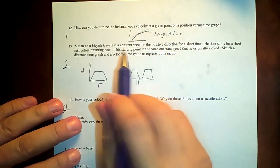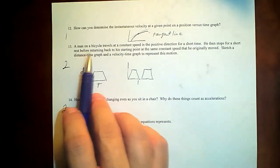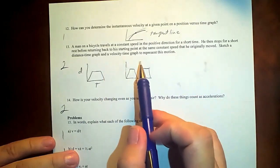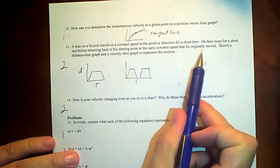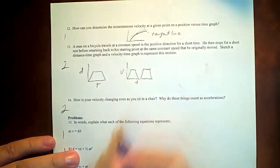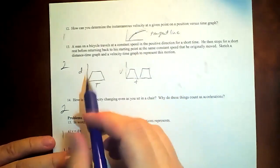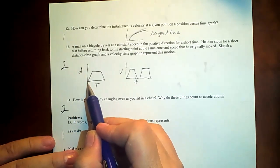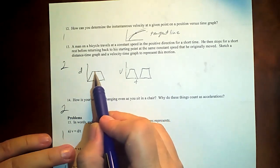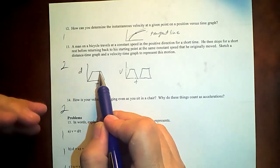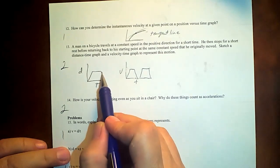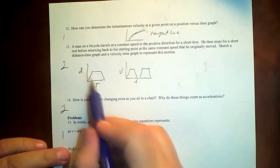I don't think anybody got this right. 13. A man on a bicycle travels at a constant speed in the positive direction for a short time. He then stops for a short rest before returning back to a starting point at the same constant speed that he originally moved. Let's catch a distance-time and a velocity-time graph to represent this motion. So he starts out at no distance away from his origin, right? He travels at a constant speed. He's getting farther and farther and farther at some rate. He takes a rest for some time. I don't care. But what does his distance do during that time? It doesn't change, right? Over the time. And then he returns at the same rate, at the same slope, but negative, the same inverse slope as he took off at. So this is the distance versus time.